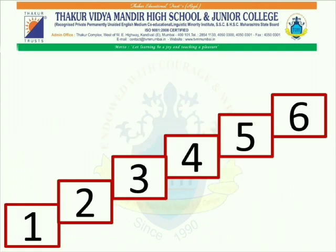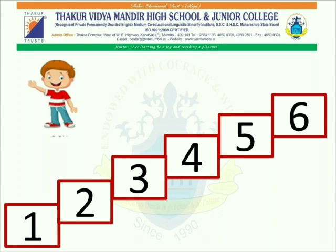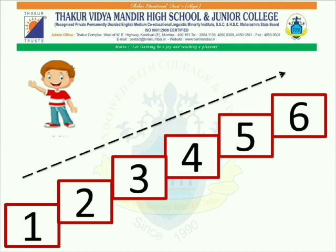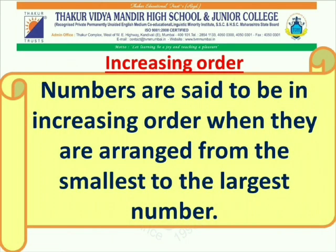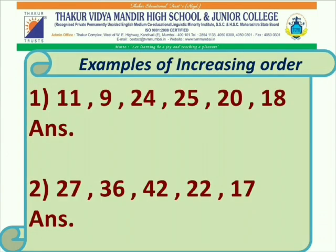Hello students, this is Sam. Can you help Sam count these numbers from 1 to 6? Come, let us count together: 1, 2, 3, 4, 5, 6. What did Sam just do? Sam counted the numbers from 1 to 6 in an increasing order. Now, what is increasing order? Numbers are said to be in increasing order when they are arranged from the smallest to the largest number. Now, let us see a few examples of increasing order.